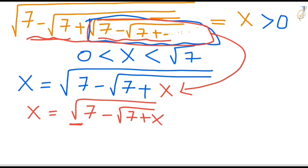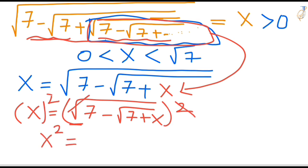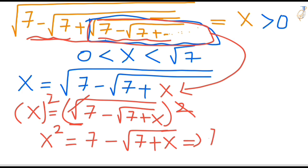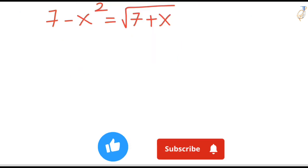In the right-hand side we have a radical sign — let's eliminate that. Do the square on both sides: the square and square root get cancelled, and you are left with X squared equal to 7 minus square root of 7 plus X. We can rewrite this as: 7 minus X squared equals square root of 7 plus X.